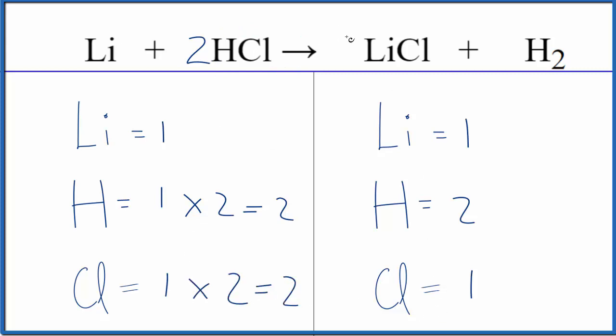So we put a two in front of the lithium chloride. One times two, that's two. And the one times the two for the chlorine, that'll give us two of those. So we've balanced the chlorine atoms.